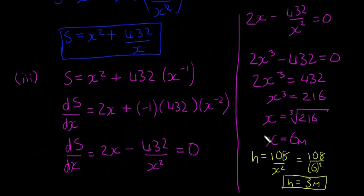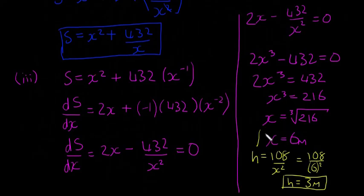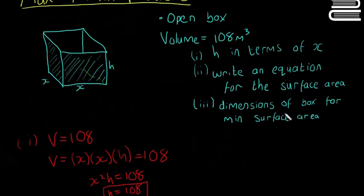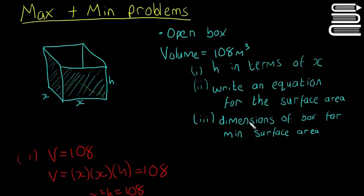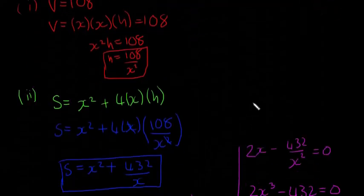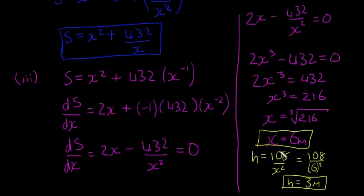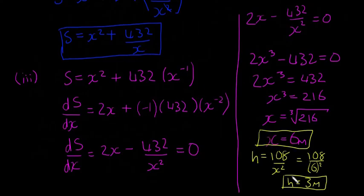So the dimensions are x = 6 metres and h = 3 metres. That's the answer to what dimensions give the minimum surface area. However, if it's not a straightforward quadratic, we need to do one more step — we need to confirm it's actually a minimum and not a maximum, so we continue with the second derivative.